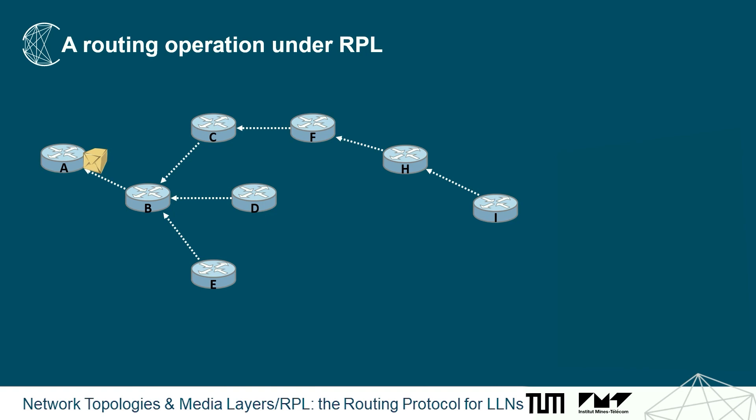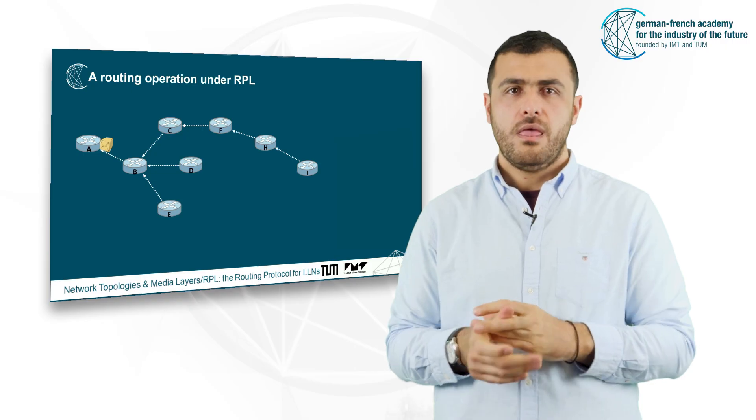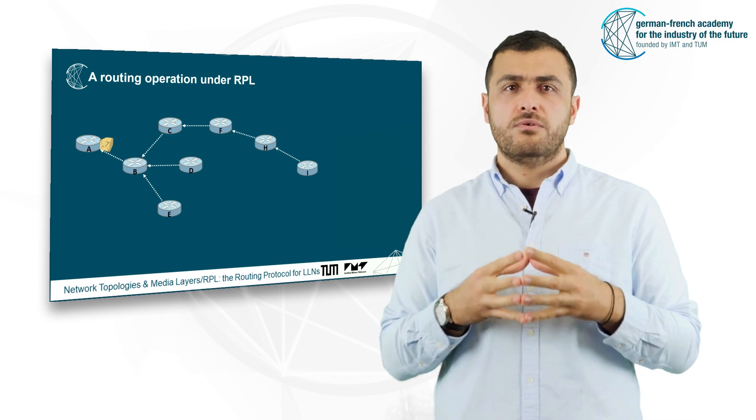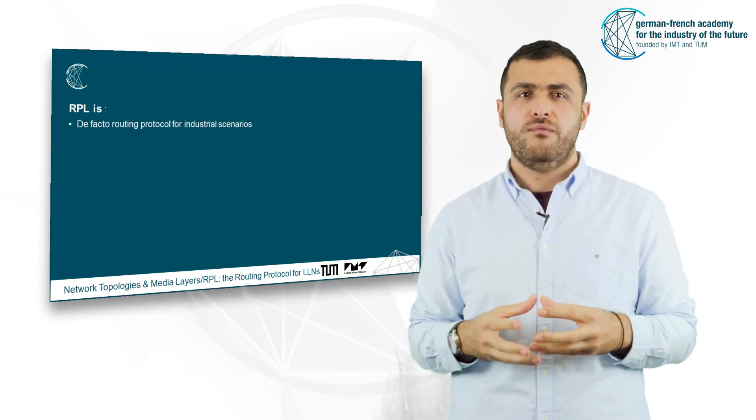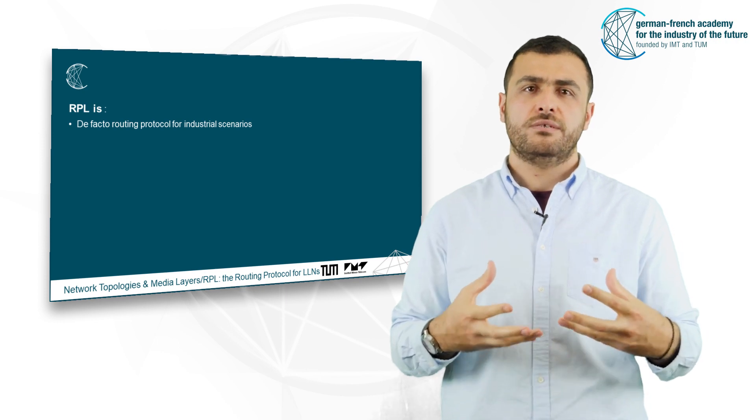This operation is called routing. RPL is one of the most adopted routing protocols and it is the de facto routing protocol for industrial scenarios such as the smart grid.